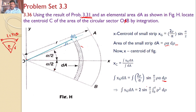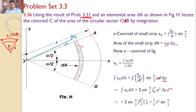For ∫x_g dA, I can take the constant terms 2·sin(α/2) outside. Alpha and alpha cancel, leaving 2·sin(α/2) · ∫₀ʳ ρ² dρ. Performing the integration gives 2·sin(α/2) · [ρ³/3]₀ʳ. After simplification, ∫x_g dA = (2/3)·r³·sin(α/2).